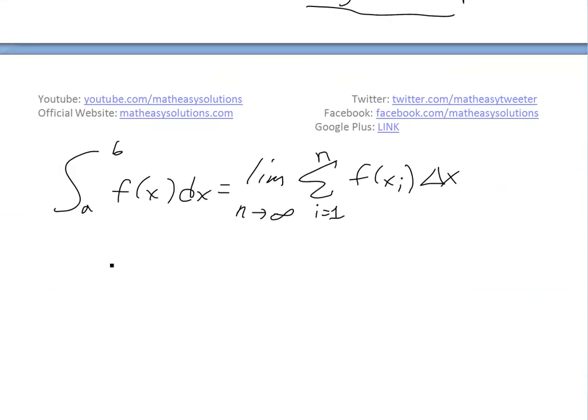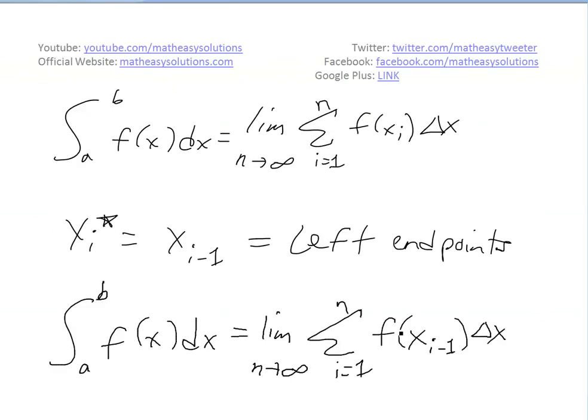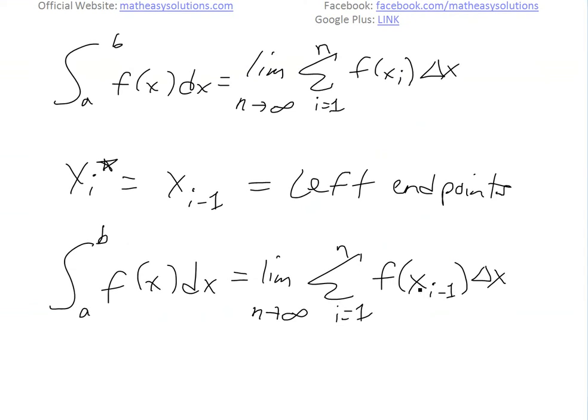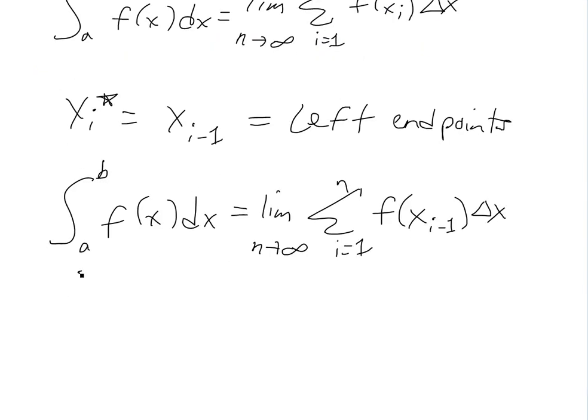And we can also do the same with the left endpoints if we let x_i* equal to x_(i-1) here. This is equal to left endpoints. And you'll get something like here, all we do is replace x_i* with x_(i-1) here. And this definite equals, it's equal to, it doesn't matter which one you pick, because as you go to infinity, the rectangles will get smaller and smaller, so you can get more and more accurate, regardless of which endpoints or which, or in between endpoints you choose.